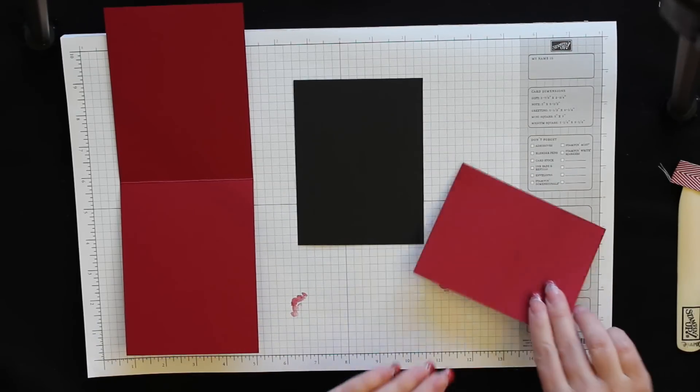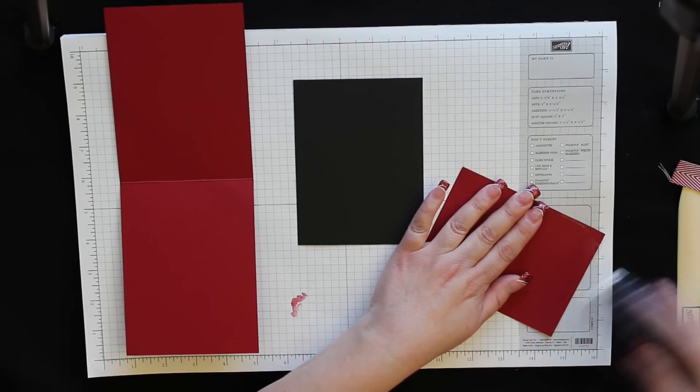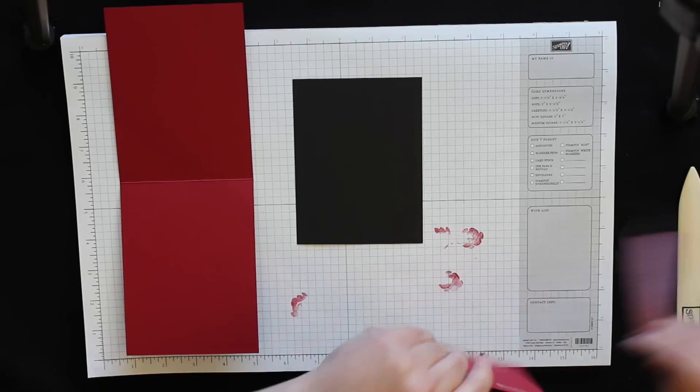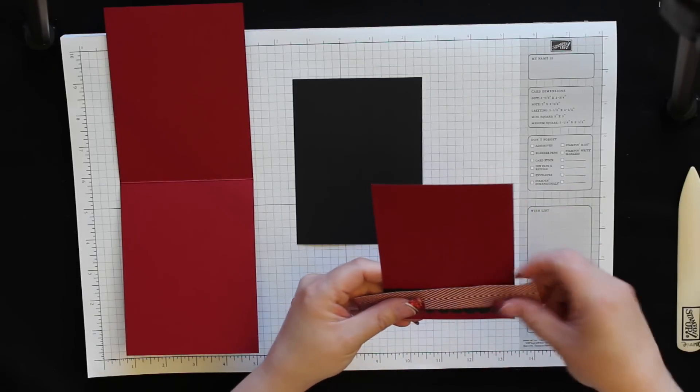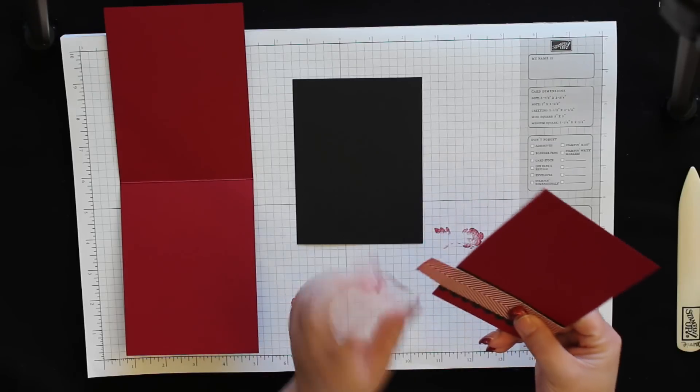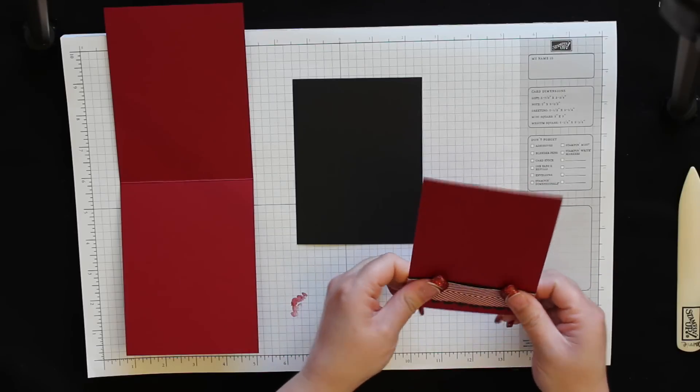Then I'm going to do just like I did on the front. Flip it over, add some fast fuse because this is where the ribbon is going to go. I'm going to center the ribbon on there. And again, I made sure that the point was going to the left. And press that into place.